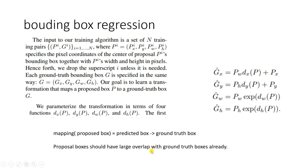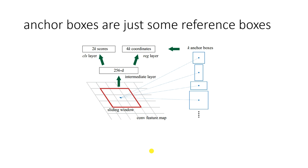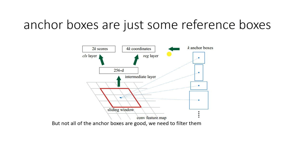So anchor boxes are used as reference boxes — as initial proposals — and we try to estimate a regression mapping. When we apply this mapping to these anchor boxes, they get mapped to the ground truth box. That's what we want to estimate.